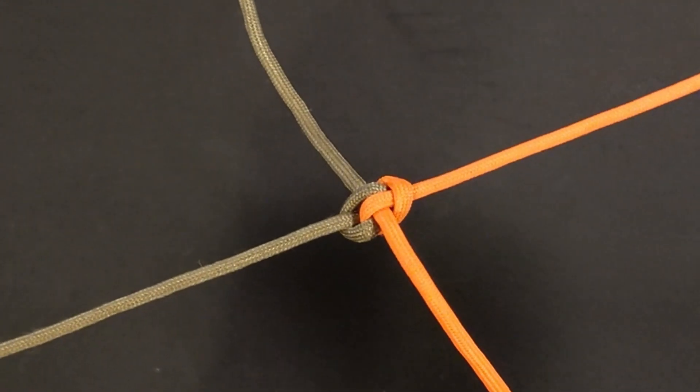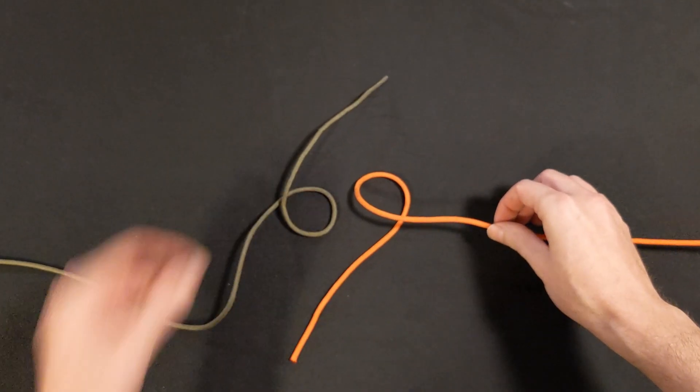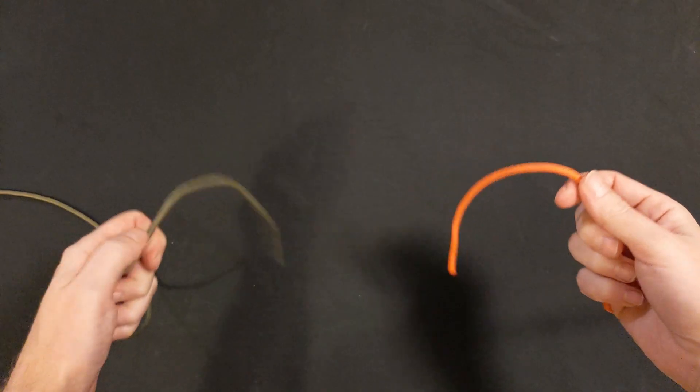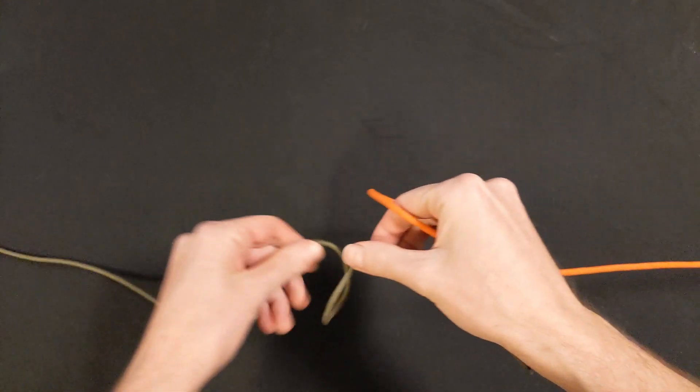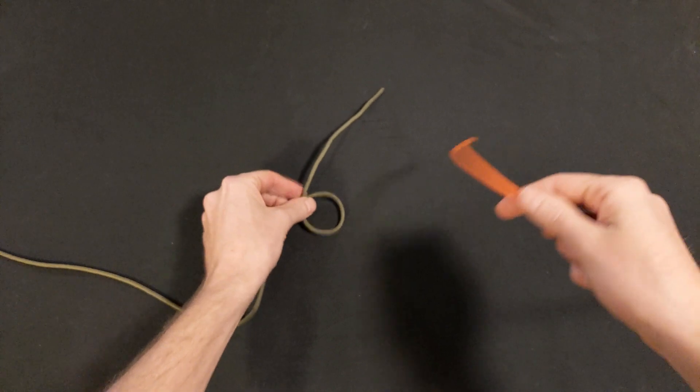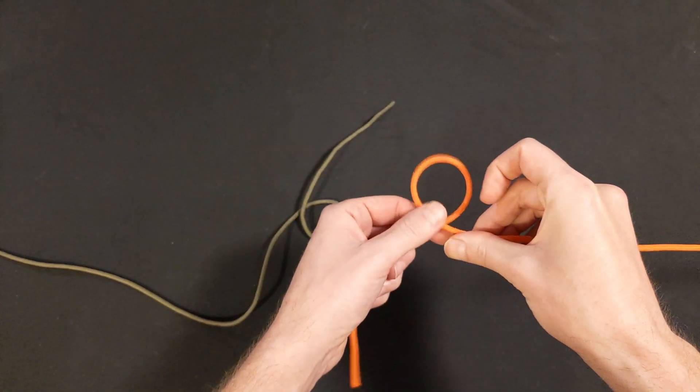Here's how to tie the Zeppelin bend using what some call the 69 method. Make a loop in the left line that resembles a 6, then make a loop in the other line that resembles a 9.